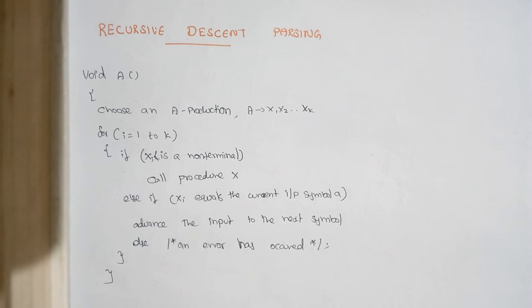Recursive descent parsing is a type of top-down parser where we start from the starting symbol, keep on applying predictions for each variable, and finally derive to some set of input symbols.